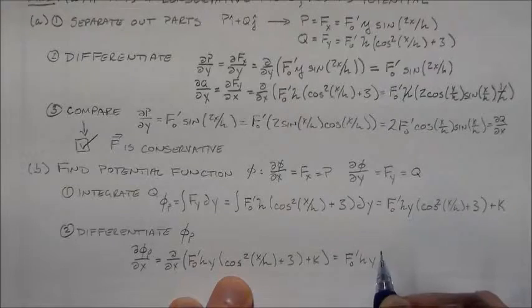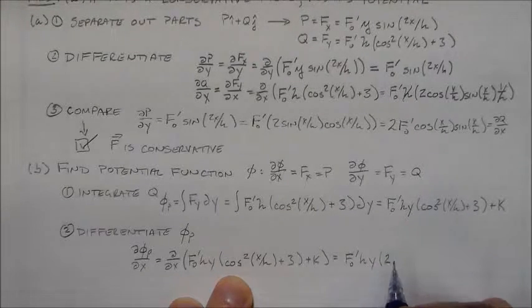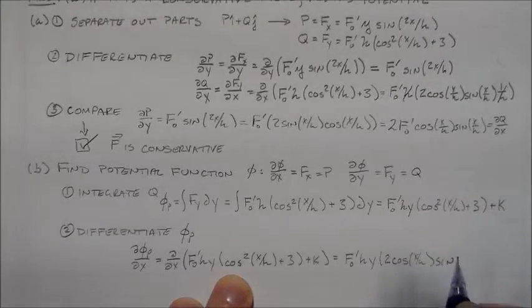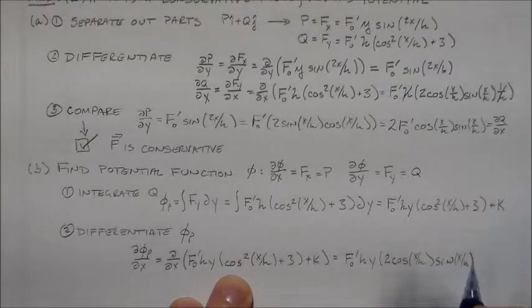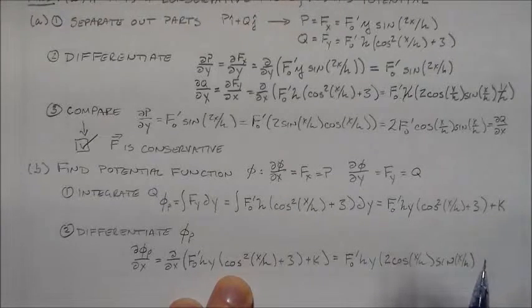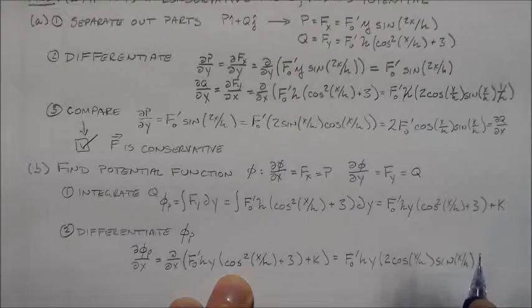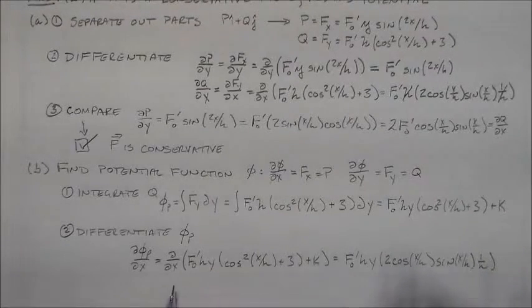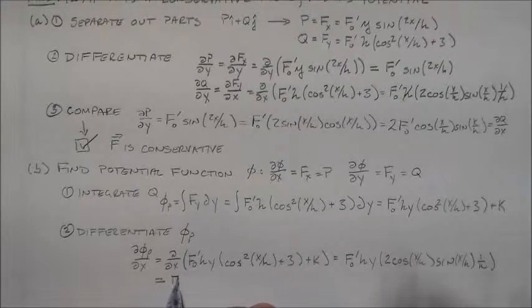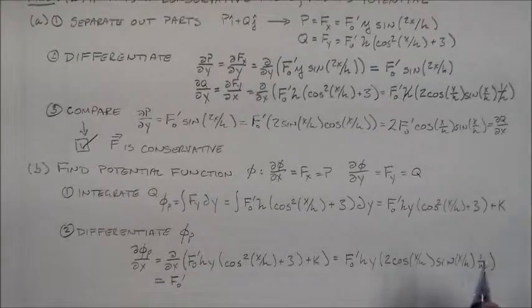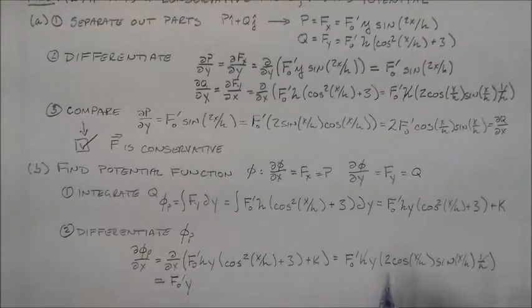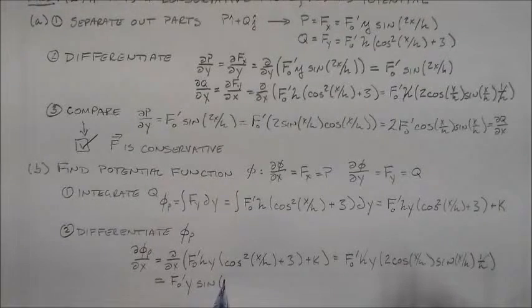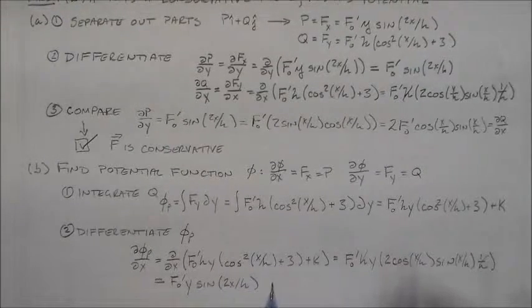So all I have left is to do this guy. So he is 2 cosine x over h, sine x over h, and what else would I want to do with this guy? I'd want 1 over h here. So then this just goes back to what I was saying before, is that this is f naught prime, the h's cancel, I leave my y, this guy all goes together as a sine 2x over h, and it's exactly what we want.